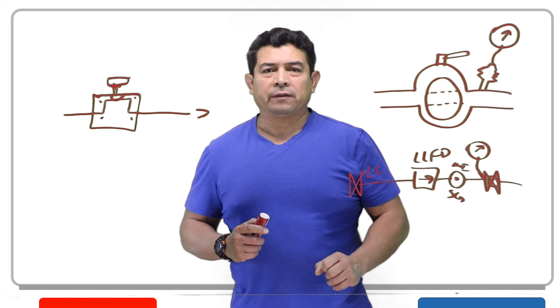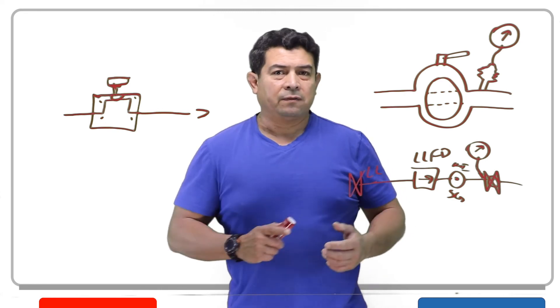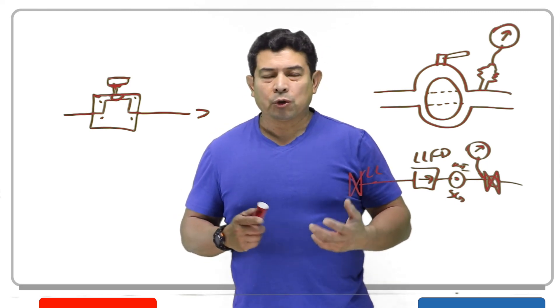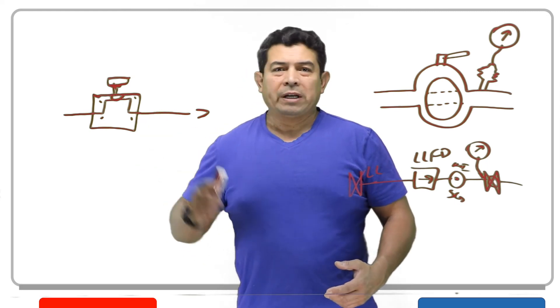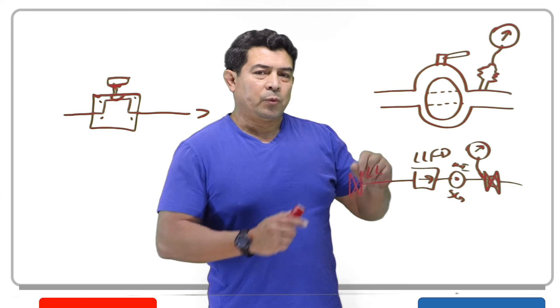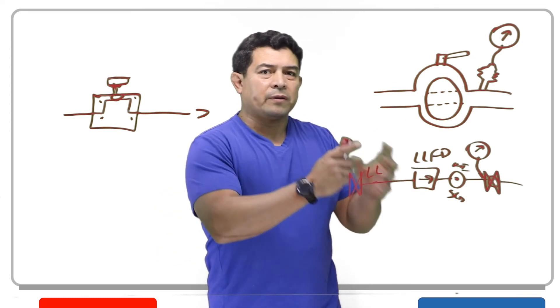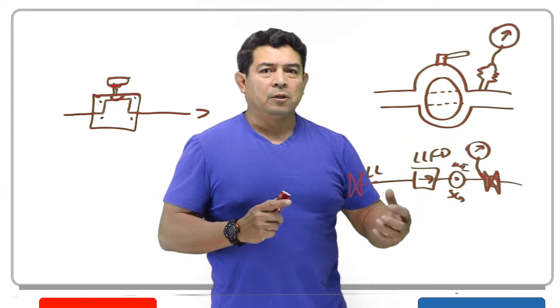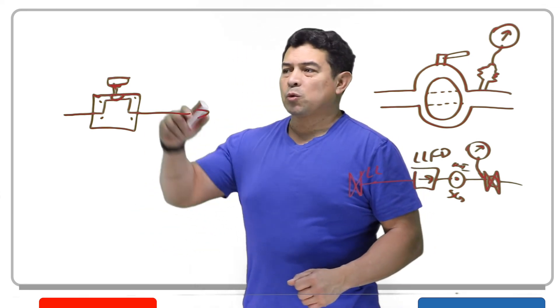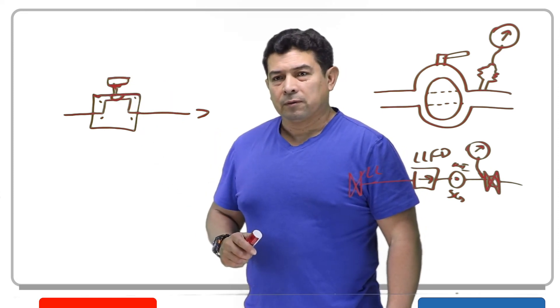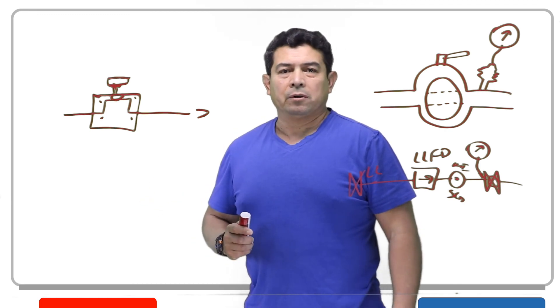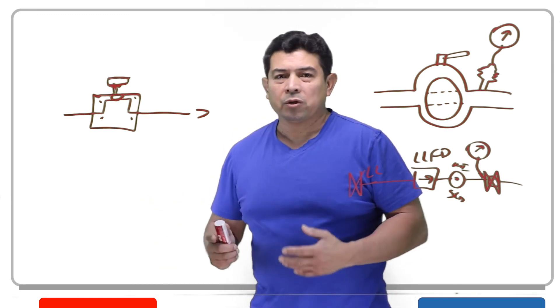So now instead of having a TXV, a thermostatic expansion valve, or a piston, or a capillary tube or anything like that, we would have these and someone would have to sit there and actually adjust and control the flow so that we could maintain the evaporator at a certain temperature and maintain the room at a certain temperature. That would be one of the purposes for this when you need to actually adjust the flow. Because you're adjusting the flow, all of these 90 degree turns are not going to hurt anything.